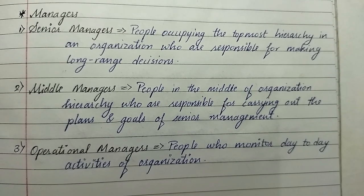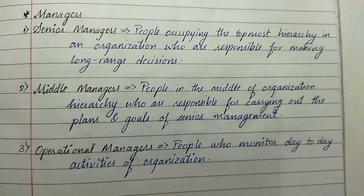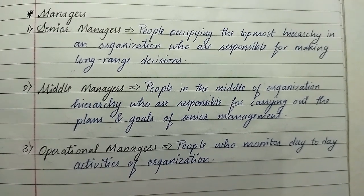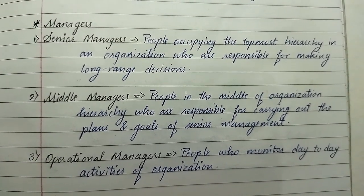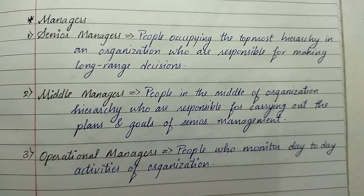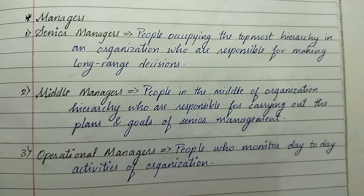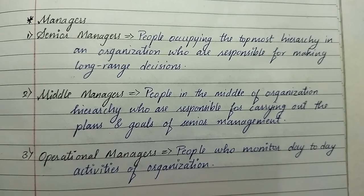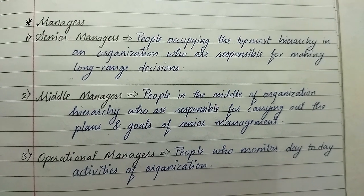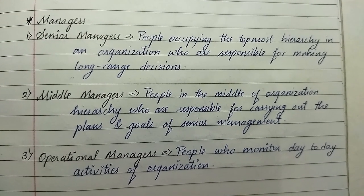First are senior managers — people occupying the topmost hierarchy in an organization, responsible for making long-range decisions. Second are middle managers — people in the middle of the organization hierarchy, responsible for carrying out the plans and goals of senior management. Third are operational managers — people who monitor the day-to-day activities of an organization.